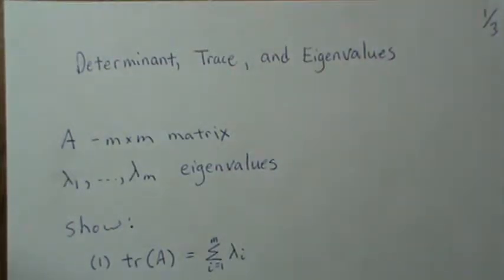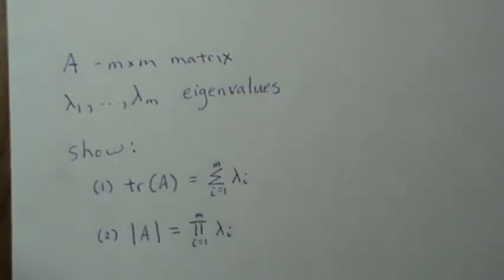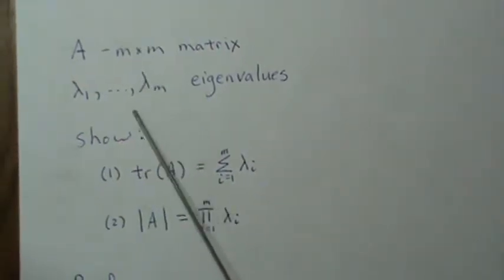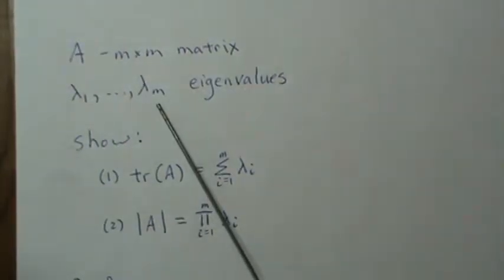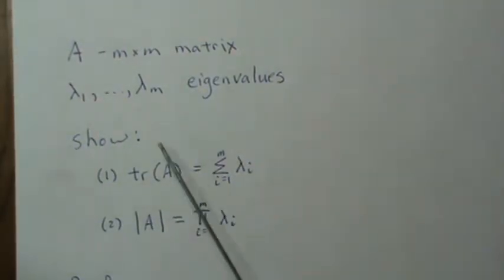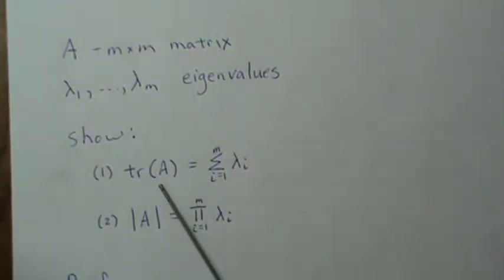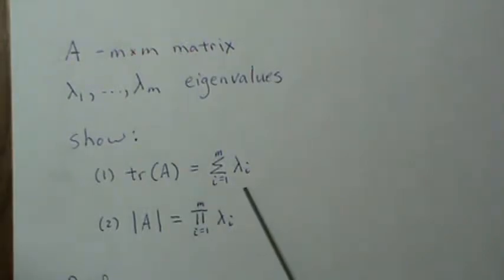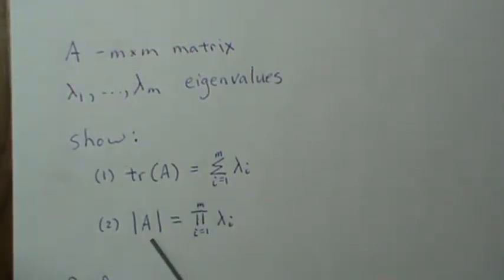Hello. In this video we're going to show two relationships between the determinant, the trace, and the eigenvalues of a matrix. If we have a matrix A that's M by M and it has eigenvalues 1 through M, we want to show that the trace of A — which means add the diagonal elements — is equal to the sum of the eigenvalues, and the determinant of the matrix is the product of the eigenvalues.